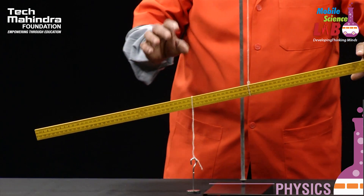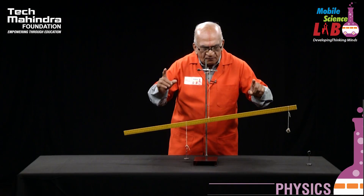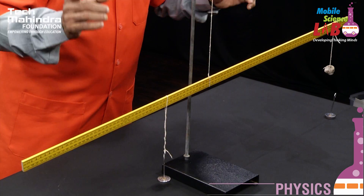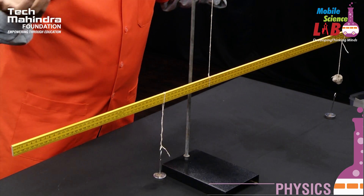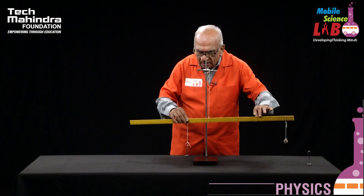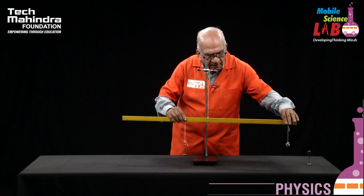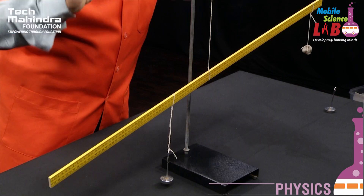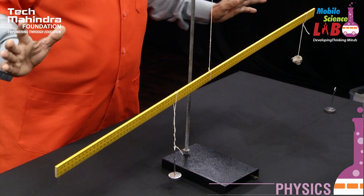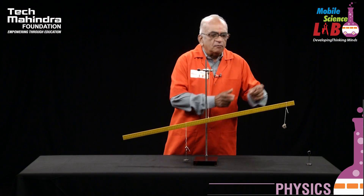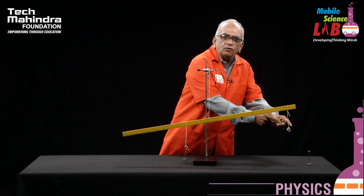To confirm the scale is horizontal, if it doesn't move when you count 1, 2, 3, we can take it that it is balanced. I am just leaving it now — 1, 2, 3. It is horizontal to the ground. Now we can calculate the movements and find the weight of the unknown body.